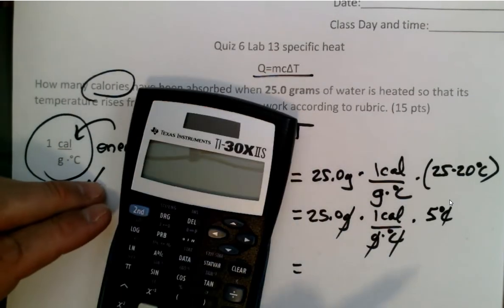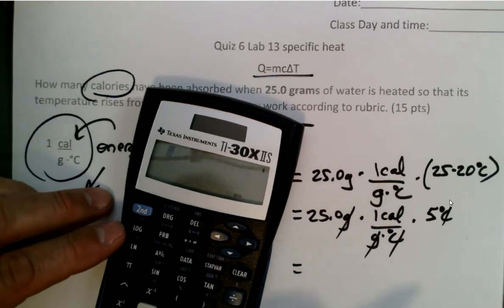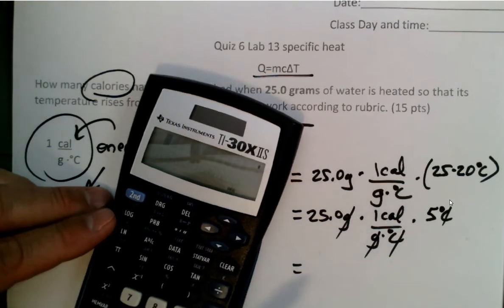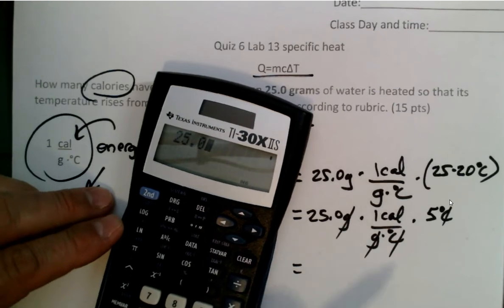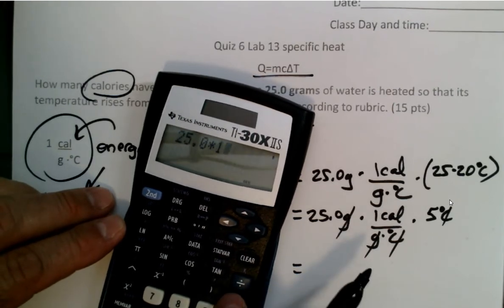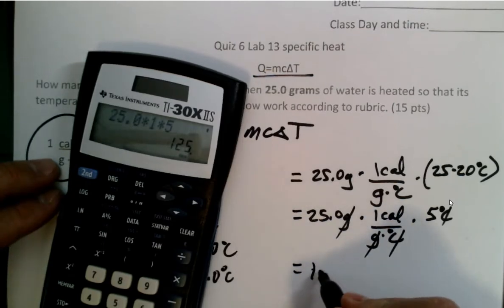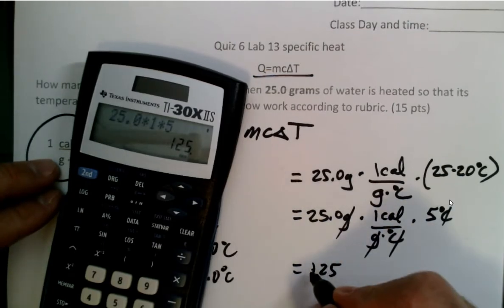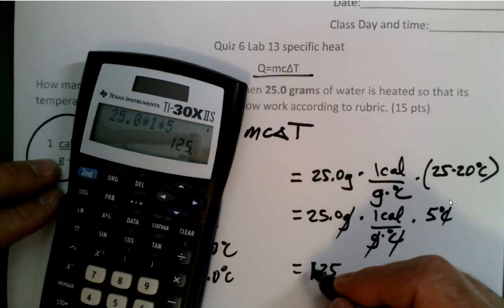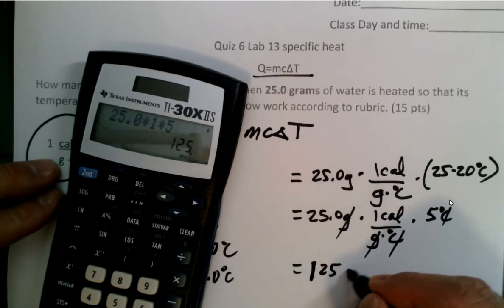Let's get our calculators out. Estudiantes, on and clear. 25.0 multiplied by one multiplied by five. Enter. And I got 125. Calories.